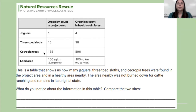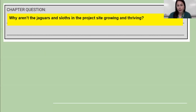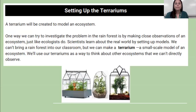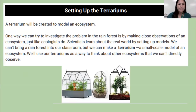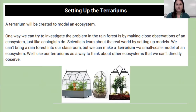Our big chapter question is: why aren't the jaguars and sloths in the project site growing and thriving? We are going to talk more about that next week. But now I want to talk a little bit about a terrarium. A terrarium is basically a mini ecosystem. Scientists, a lot of times, can't be in the ecosystem to make observations.